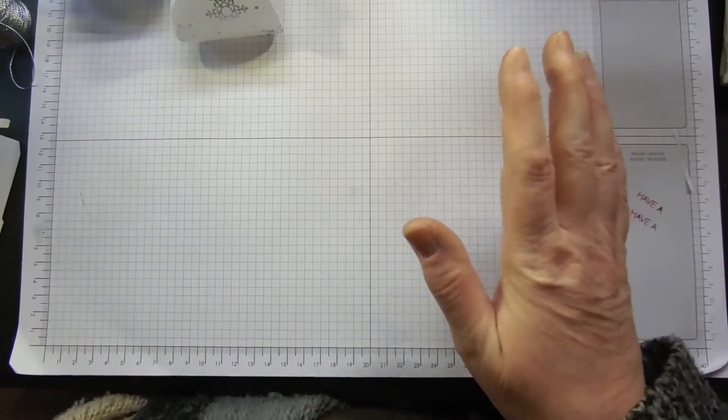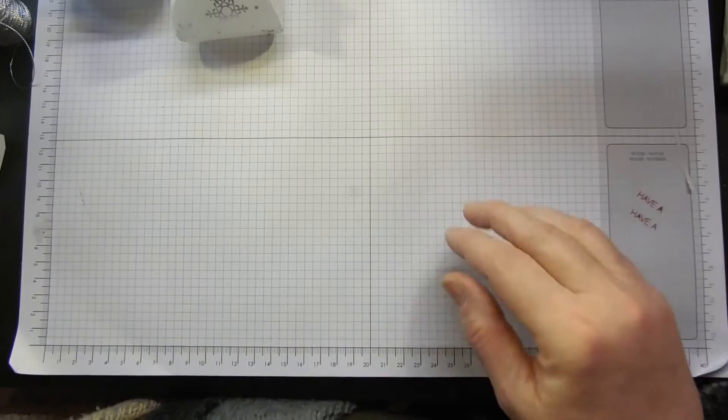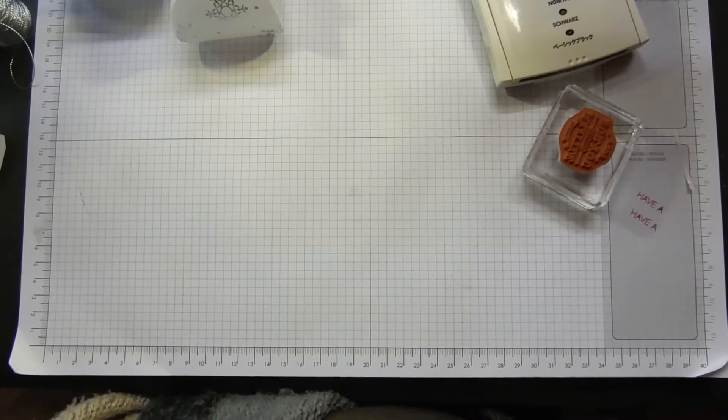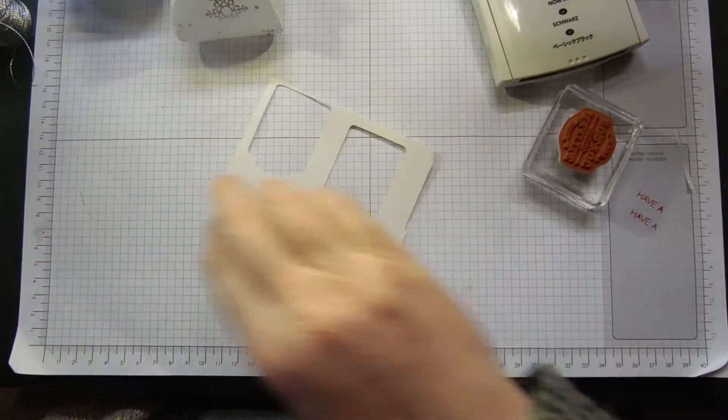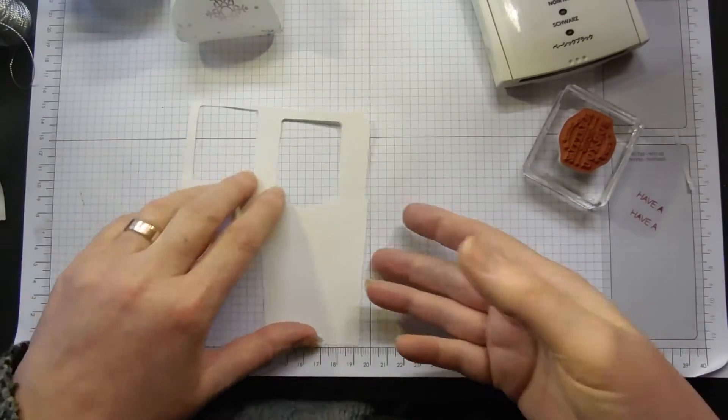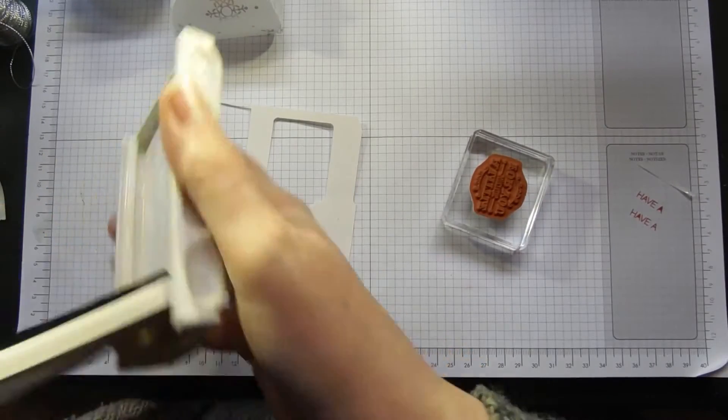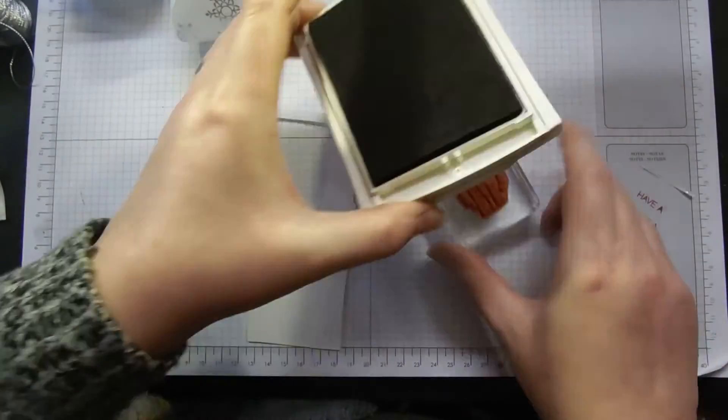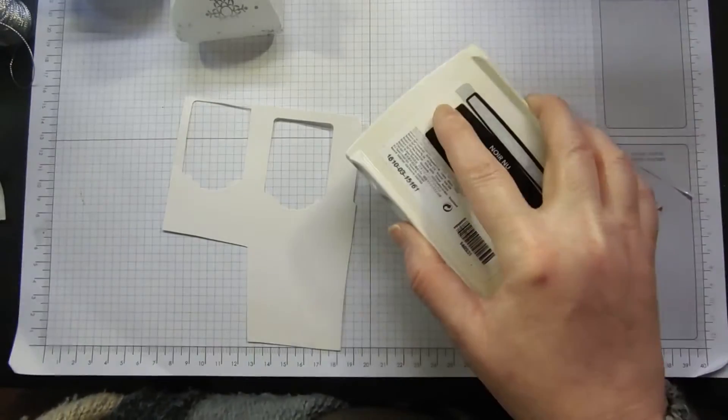The sentiment that I'm going to use on the tag - I'm going to use Shimmery Whisper White cardstock because I'm going with the silver and black theme. I'm using the Basic Black Archival ink pad. Ink that up.